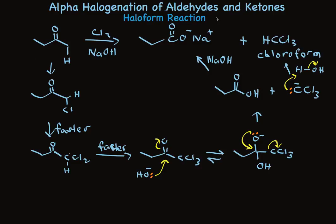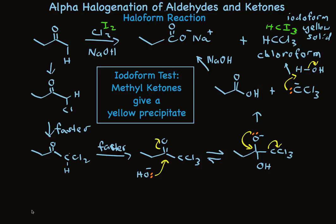There's one final twist: when the halogen is iodine, we make iodoform, which is a yellow solid. So for a very long time, the iodoform test has been a test for methyl ketones. Alpha halogenation is a synthetically useful reaction — the choice of catalyst lets you substitute preferentially at the more substituted carbon using acid, or the less substituted carbon using base.